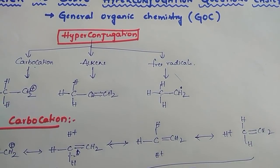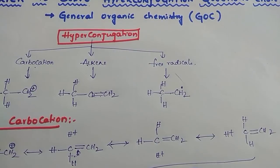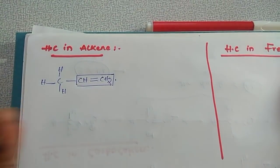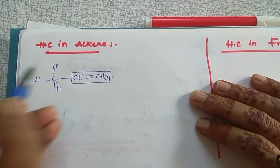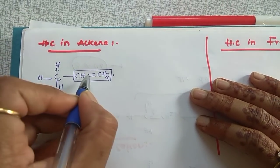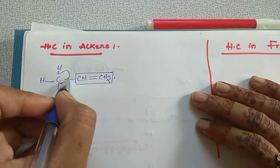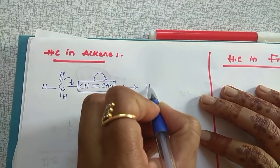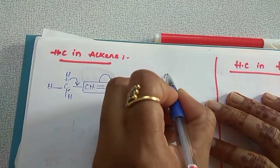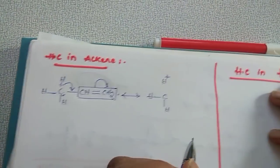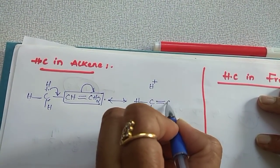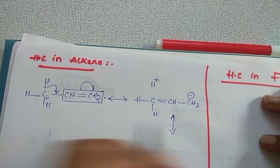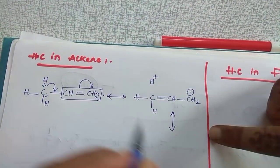In the same way, for alkenes: this is the double-bonded carbon, the next carbon is alpha, and those hydrogens are alpha hydrogens. The sigma electrons from the C–H bond are in conjugation with the pi bond. These two electrons shift to the double-bonded carbon, giving a structure: C–H, with hydrogen getting positive charge and a pi bond forming here, and CH₂⁻ on the other side. Similarly, if another hydrogen involves, we get another structure.